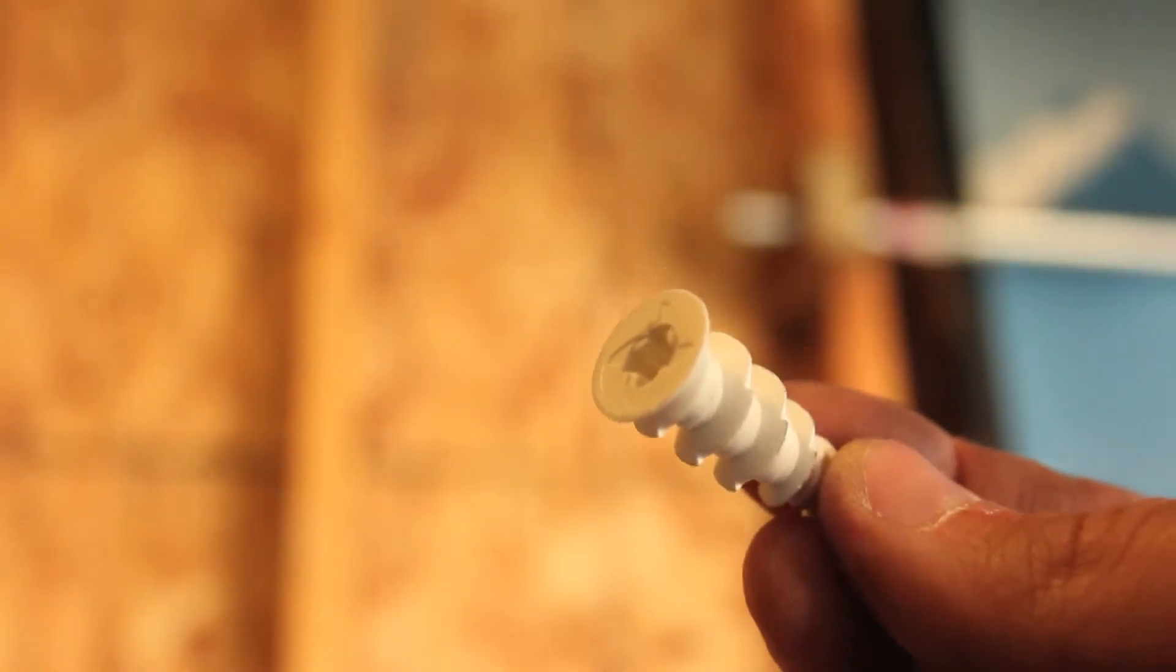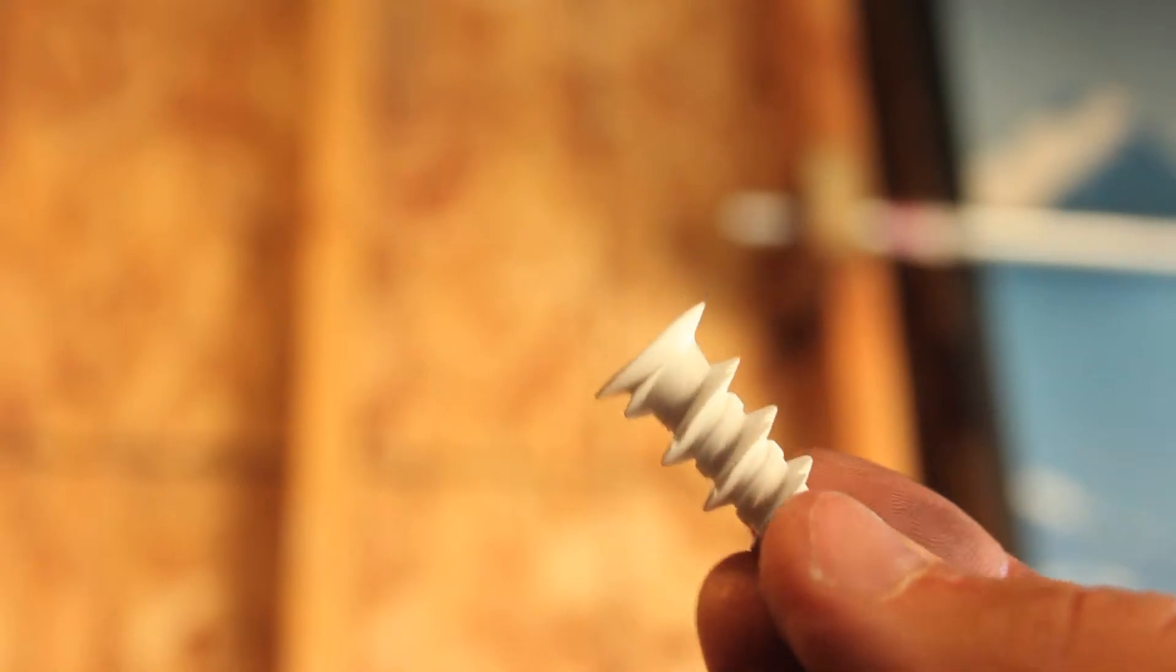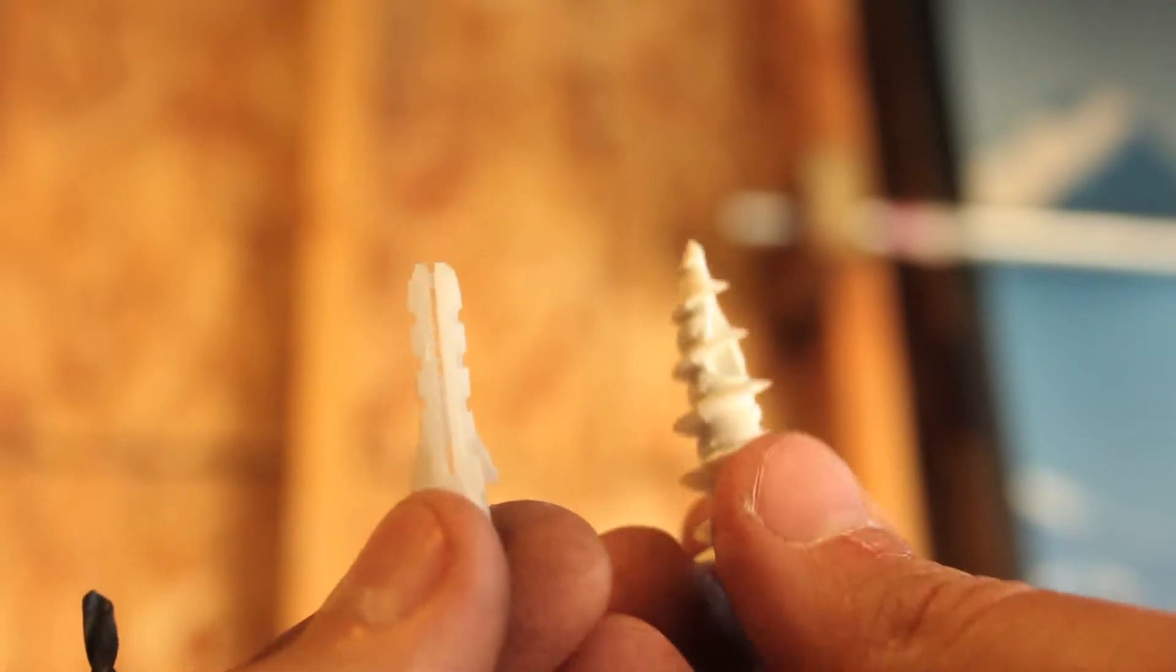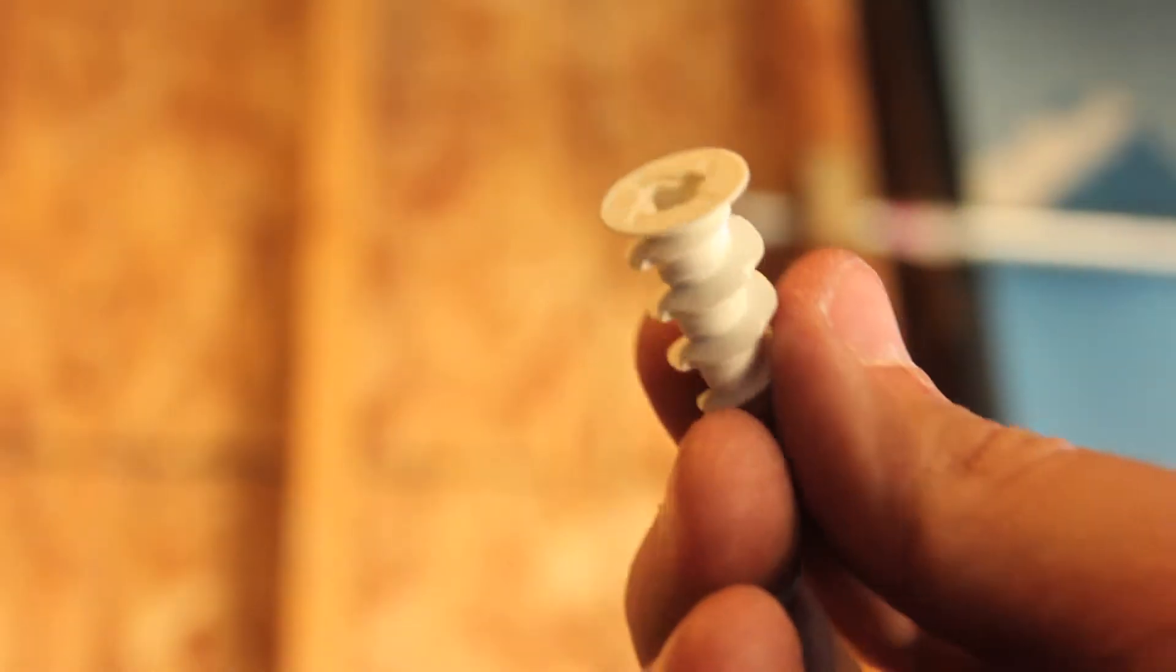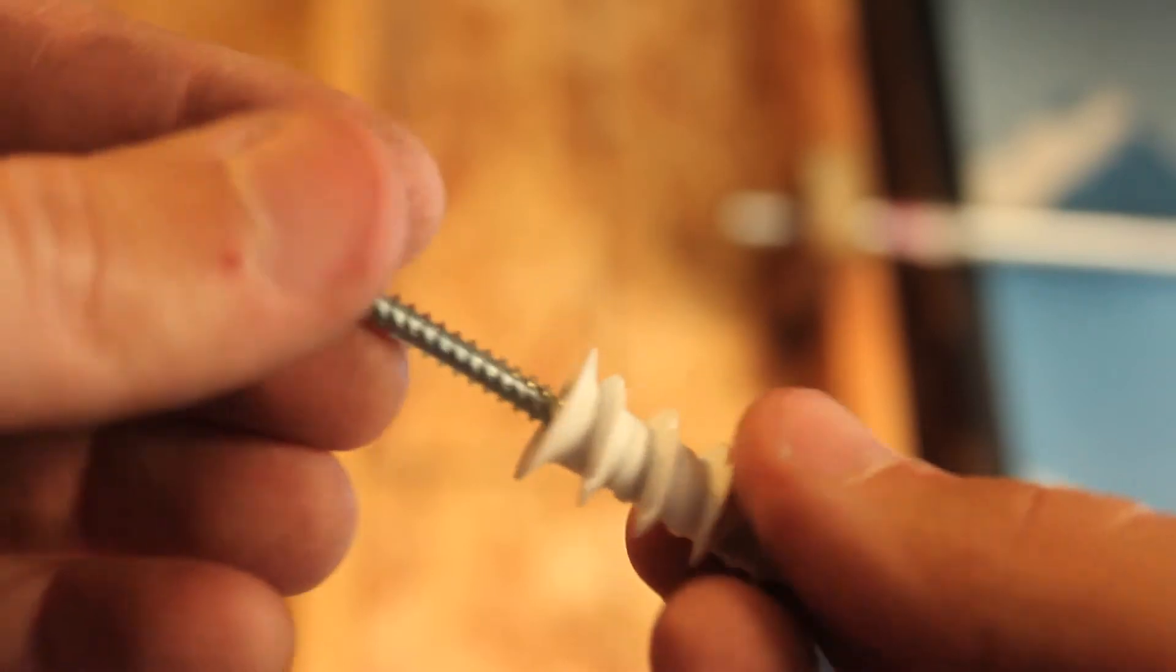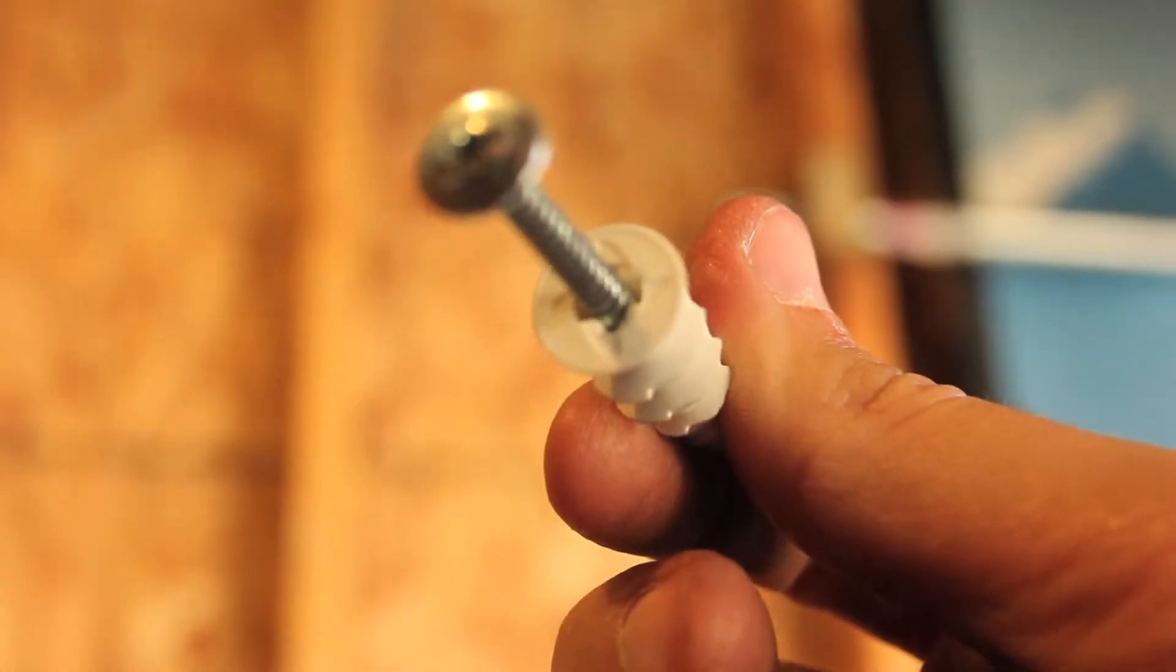Ideally you want to find studs. If you can't find one or if they're too far apart you have this drywall screw which actually is one of the better ones. Sometimes you get these little plastic ones. These are better. So you screw this into the wall and then the screw goes in like that.